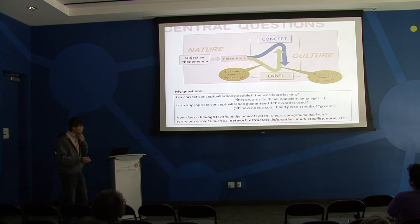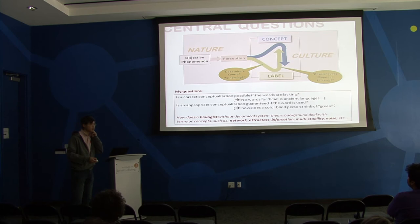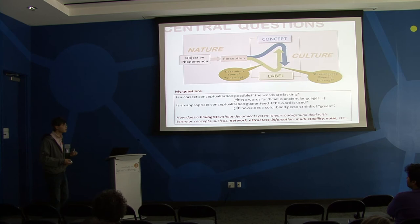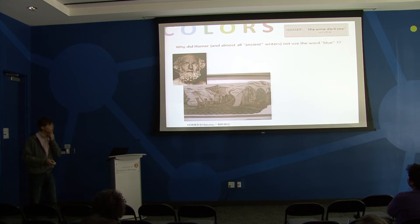For us in systems biology, many of us are really familiar with terms like network, attractors, bifurcation, and parameter space. But many are not, and those people who are not familiar with these terms read your paper and automatically invent something in their mind - at least a construct - in order to read through the text. Depending on how they do that, it can be dangerous. That is one of the potential problems. Let me illustrate all these problems with the story of color.